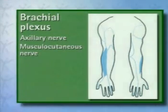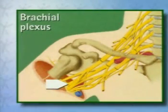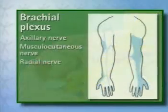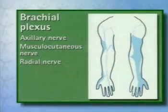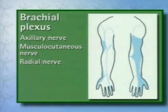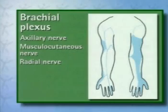The radial nerve runs along the dorsal side of the upper arm to the epicondyle of the humerus. It provides sensory innervation of the skin on the extensor side of the arm and in part the radial side of the hand. It also supplies motor fibers to the extensors of the upper and lower arm and of the hand.